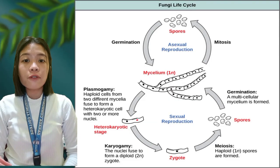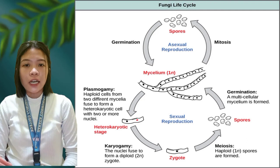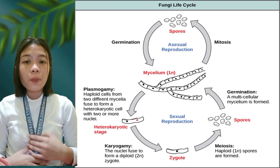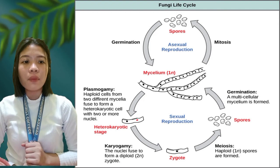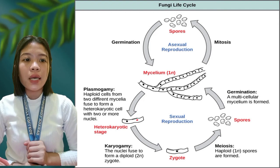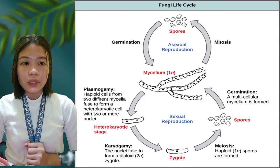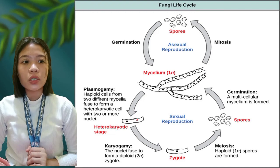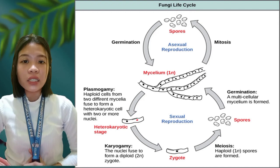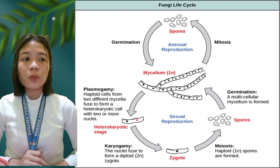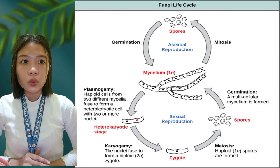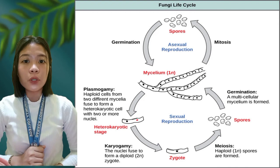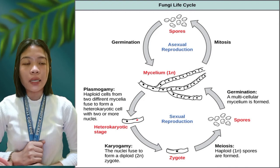Here is the fungi life cycle. When the mycelium of fungi undergoes asexual reproduction, the mycelium undergoes mitosis because they are already haploid structures that can reproduce unicellular spores. When spores are produced, they will find a place where they can germinate and produce another mycelium.